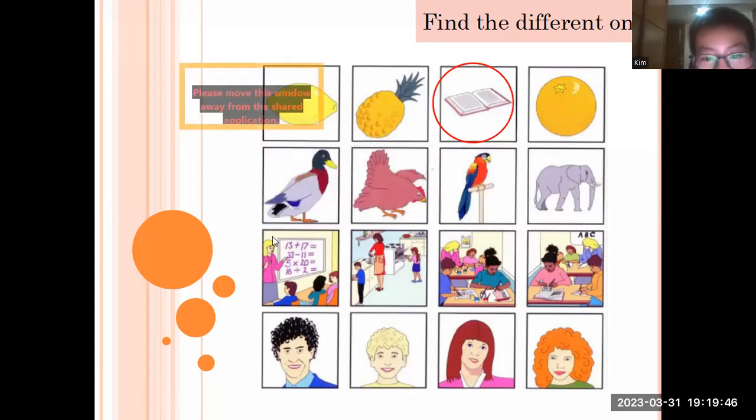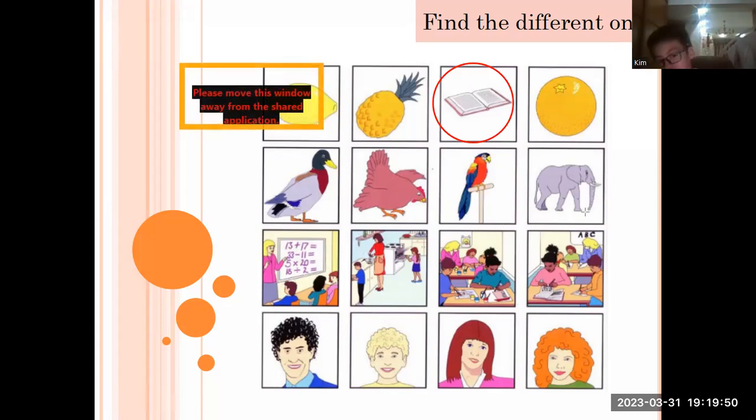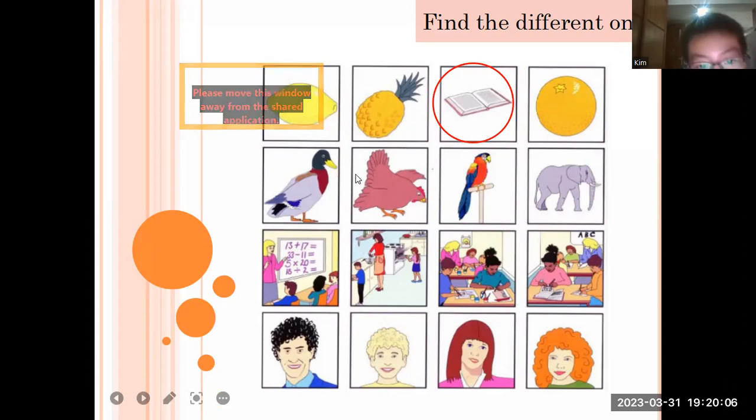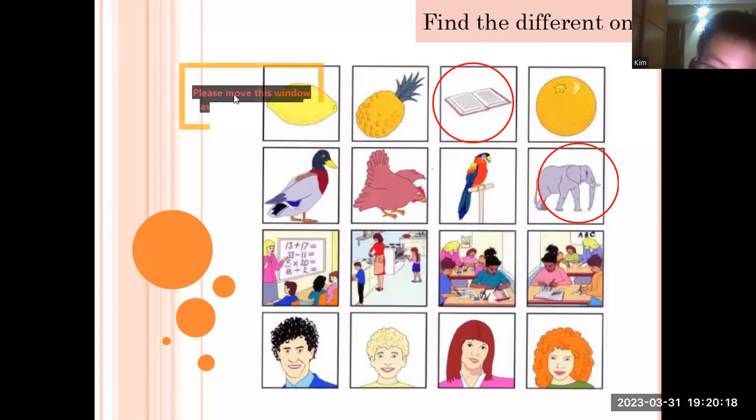What can you see? The elephant. The elephant is different because the dog, chicken, parrot are bird. Okay, what can they do? Can they run? And they can fly. Very good. Okay, what else Kim? Next one.